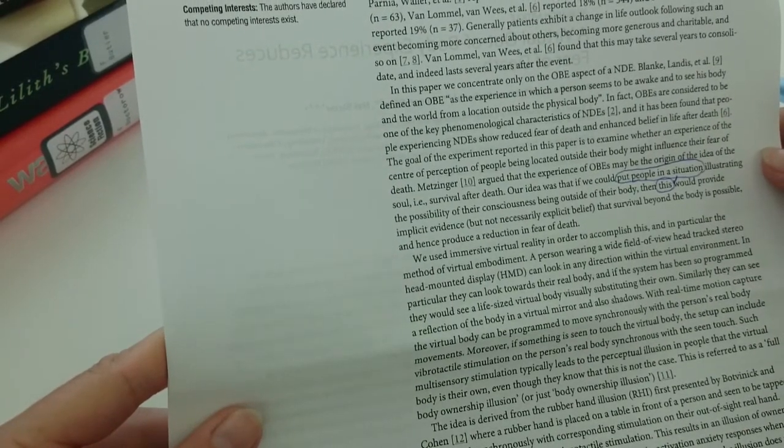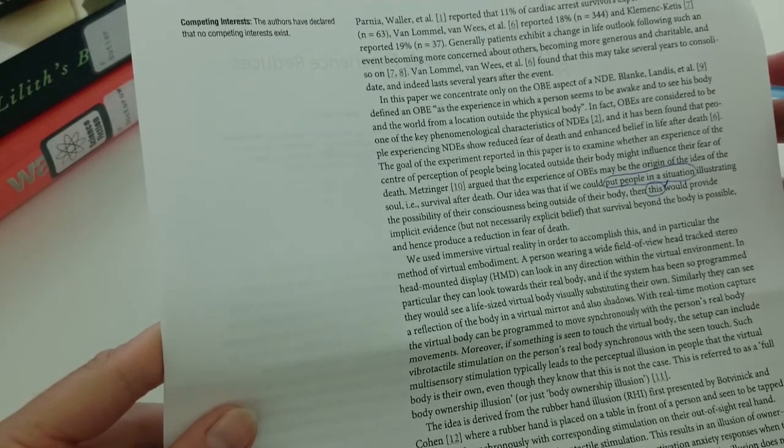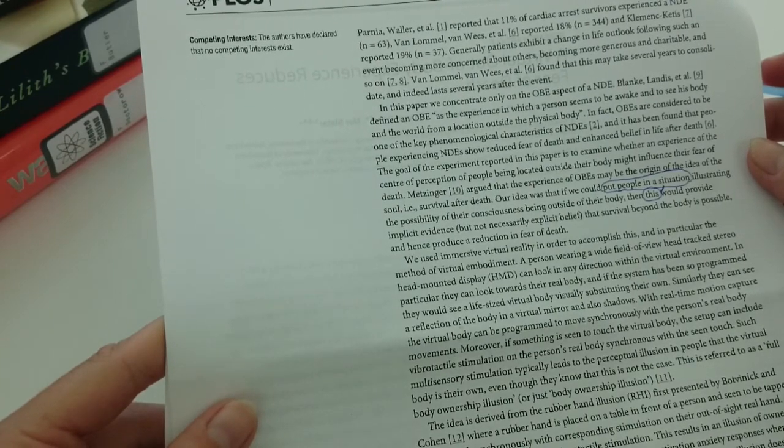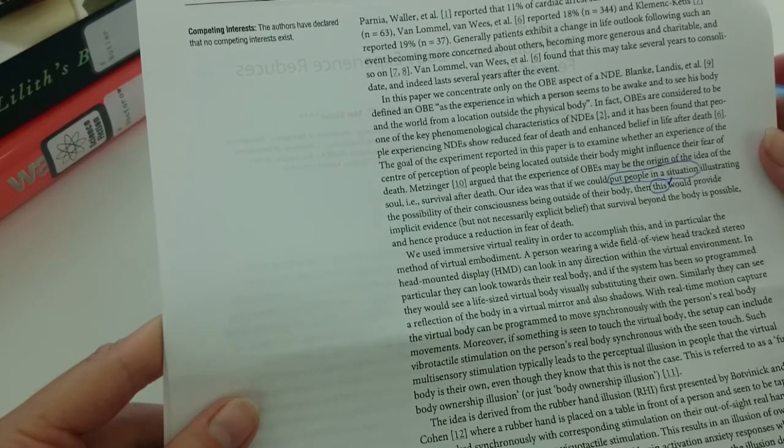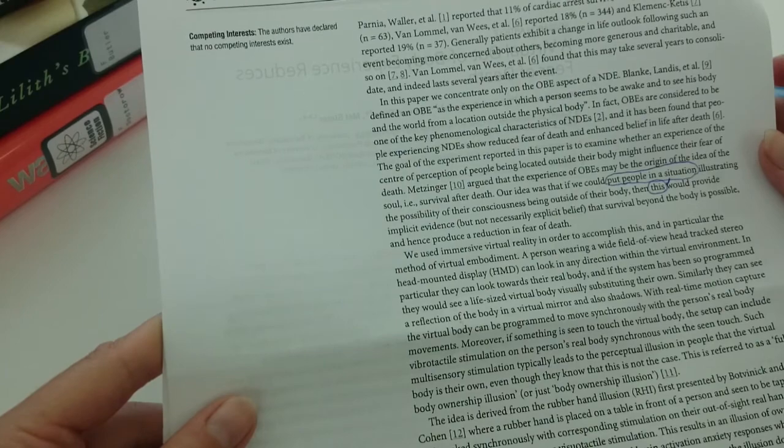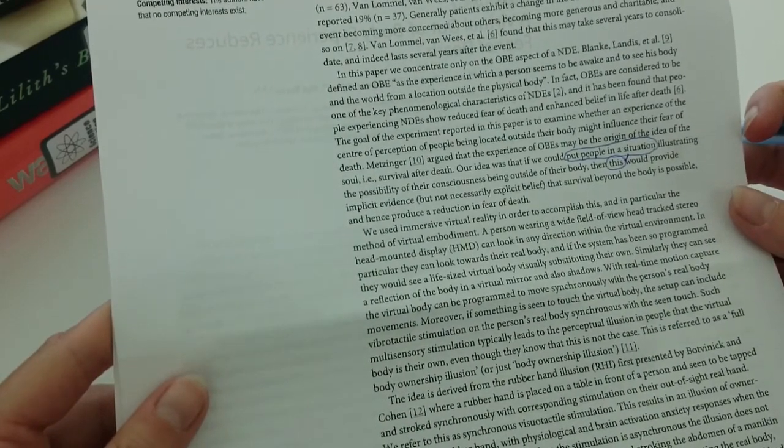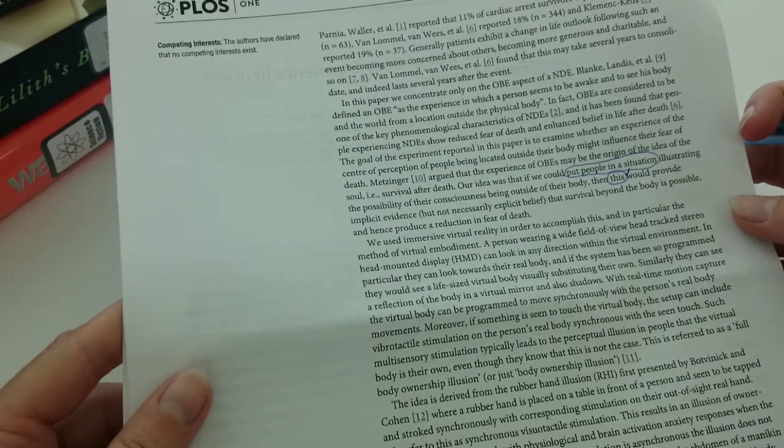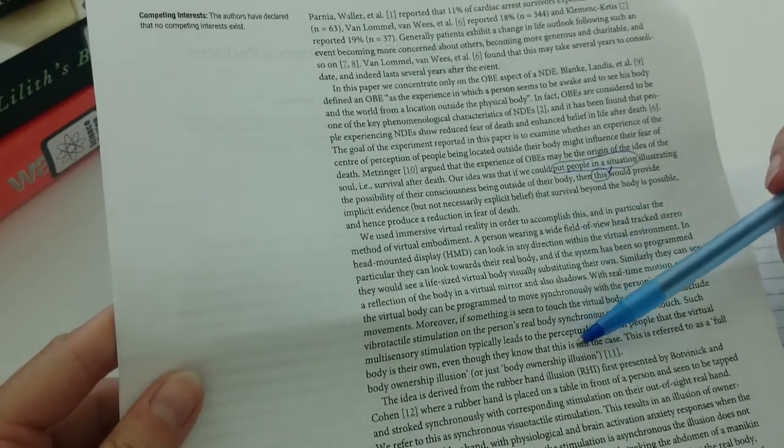We used immersive virtual reality in order to accomplish this, and in particular, the method of virtual embodiment. A person wearing a wide field of view, head-tracked stereo, head-mounted display can look in any direction within the virtual environment. In particular, they can look towards their real body, and if the system has been so programmed, they would see a life-sized virtual body visually substituting their own. Similarly, they can see a reflection of the body in a virtual mirror and also shadows. With real-time motion capture, the virtual body can be programmed to move synchronously with the person's real body movements. Such multi-sensory stimulation typically leads to the perceptual illusion in people that the virtual body is their own, even though they know that this is not the case. This was referred to as a full-body ownership illusion or just body ownership illusion.